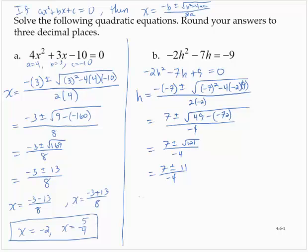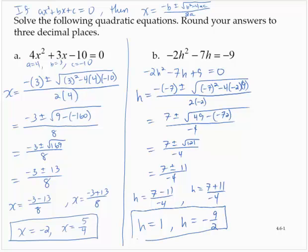So I have 7 plus or minus 11 over negative 4. Let's break it up into two values: h equals 7 minus 11 over negative 4, and h equals 7 plus 11 over negative 4. Now 7 minus 11 is negative 4, so negative 4 over negative 4 gives h equals 1. And 7 plus 11 is 18, so 18 over negative 4 is negative 9 halves. So 1 and negative 9 halves are solutions.